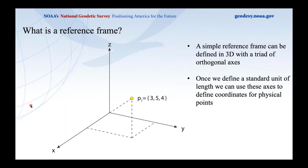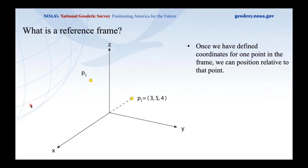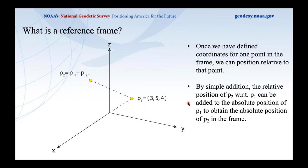Now suppose we have another point, P2, and for some reason we can't access the origin of the frame directly. If we know the published coordinates of P1, we can position ourselves relative to P1, add those two vectors together, and come up with absolute coordinates for P2 that are self-consistent — consistent with P1 and with the origin of the frame.